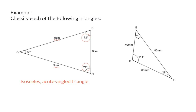In triangle DEF all three side lengths differ, so this is a scalene triangle. If we look at the biggest angle, you will see that this is bigger than 90 degrees and therefore an obtuse angle. So triangle DEF is a scalene obtuse angled triangle. In the next video we're going to have a look at some more properties of triangles.